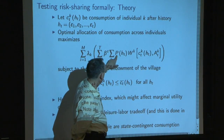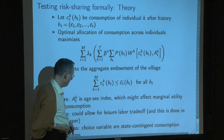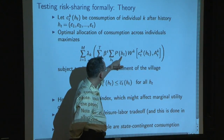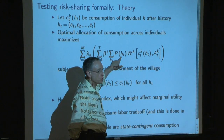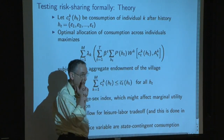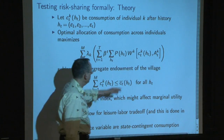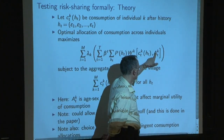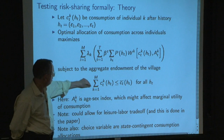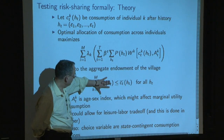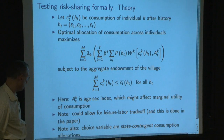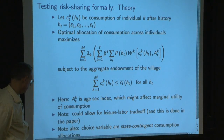These states of the world are not just the contemporaneous realization of all the shocks — it's the entire history from the initial date out, like the branches of a tree. Utility contemporaneously depends on consumption and gender/age weights. Whatever the sum of consumption is, it's the aggregate, and then the idea is how to distribute that aggregate to maximize this objective function.